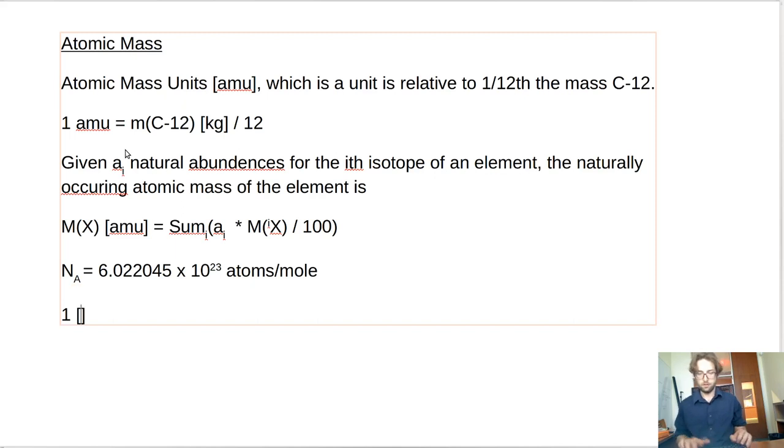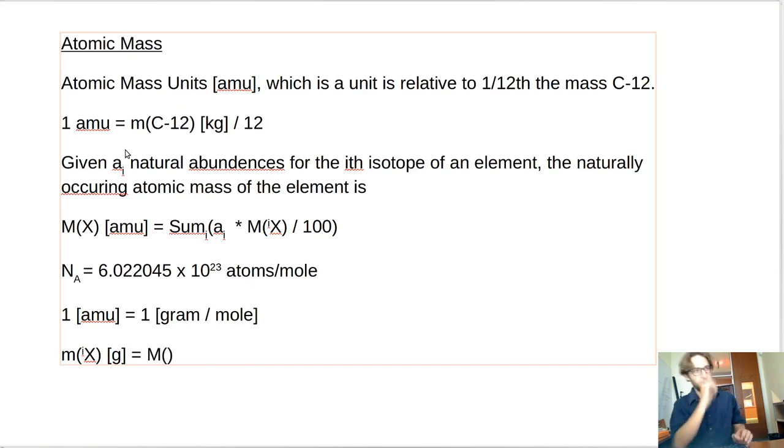So 1 AMU equals 1 gram mole. Alright? So if you wanted to know the mass in kilograms or in grams, you just have to take the mass of the i-th nuclide. The mass in grams of the i-th nuclide is just equal to the mass of the i-th nuclide in AMU divided by N sub A, sub big A. All right?